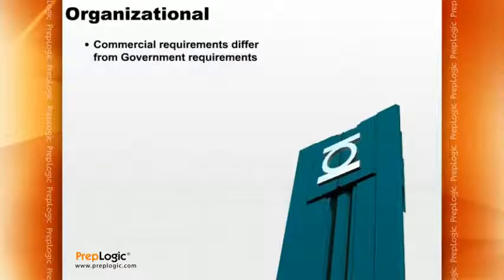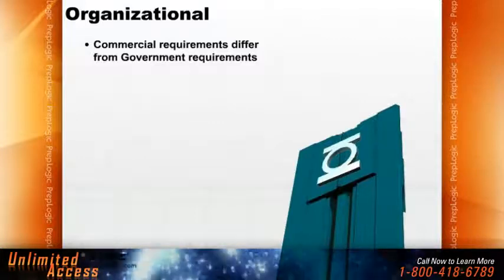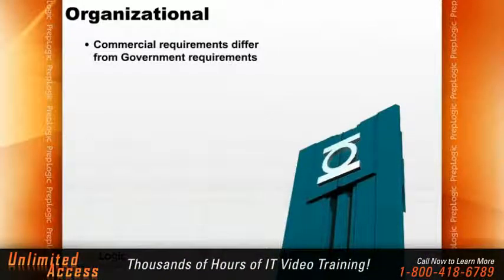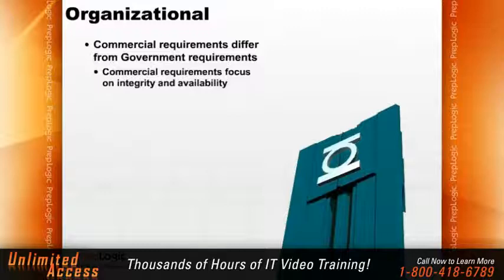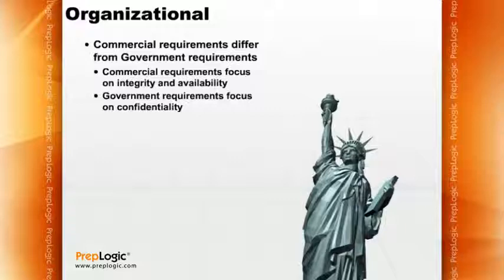Recalling the CIA triad, confidentiality has been left out of the commercial focus — but that doesn't mean commercial organizations don't care about it. Some focus exclusively on confidentiality. However, since a commercial venture is fundamentally about making money, organizations want to ensure their systems can be trusted and are always available. So commercial requirements tend to focus on integrity and availability. On the flip side, government requirements tend to focus on confidentiality, because government entities store more confidential data than any other types of entities.